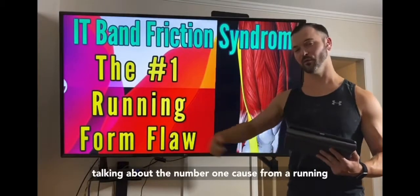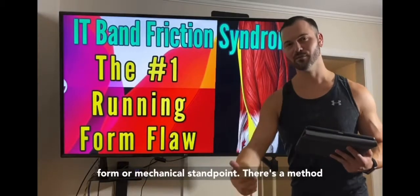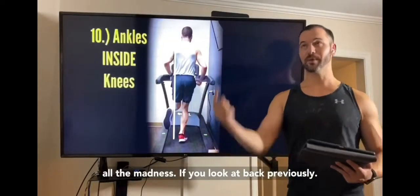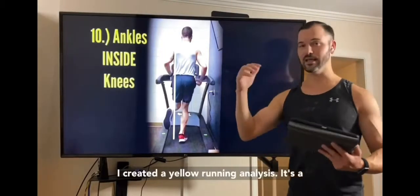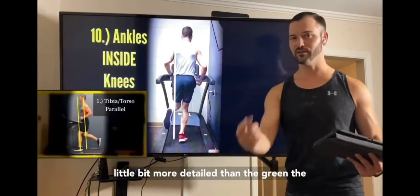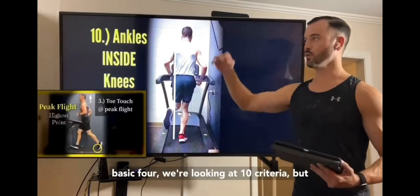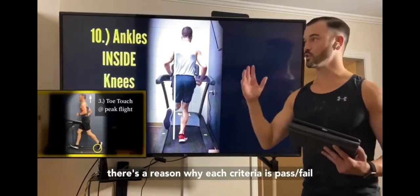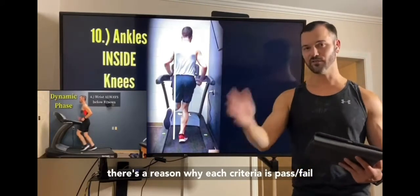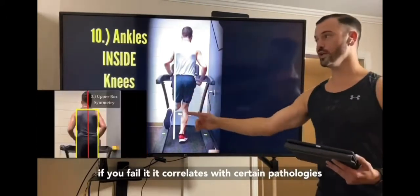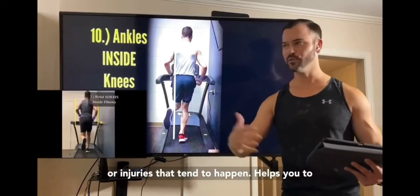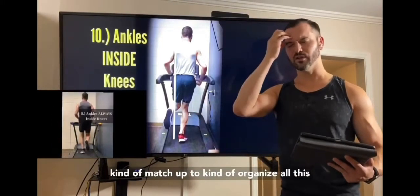The number one cause from a running form or mechanical standpoint — there's a method to all the madness. If you look back, I created a yellow running analysis. It's a little bit more detailed than the green, the basic four. We're looking at 10 criteria, and each criterion is pass/fail. If you fail it, it correlates with certain pathologies or injuries that tend to happen, helping you organize all this in your mind.